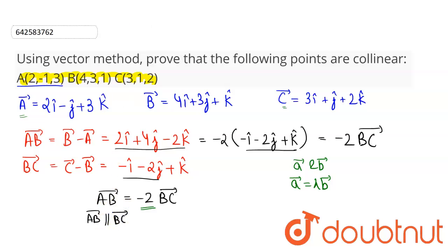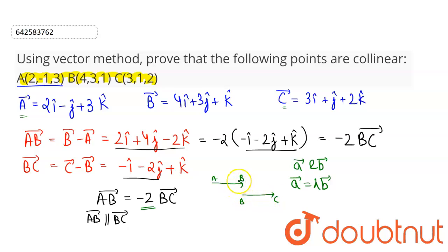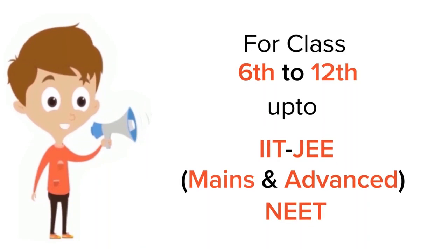So we can write that AB vector is parallel to BC vector. These two vectors are parallel, and since point B is common to both, that means points A, B, and C are collinear. This completes our solution.